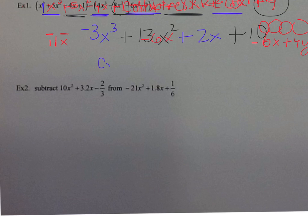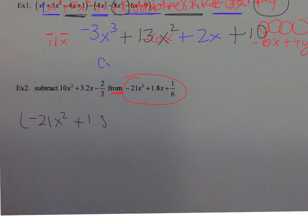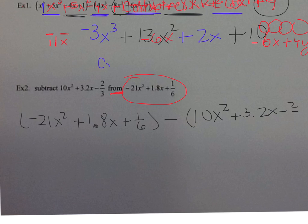For the last one, it says 'subtract' this polynomial from another. Notice the polynomial is not in parentheses, so we'll put it in parentheses. Since it says 'subtract from,' the 'from' always comes first. So the first polynomial in parentheses is: negative 21x squared plus 1.8x plus 1.6, minus the second polynomial: 10x squared plus 3.2x minus two-thirds.